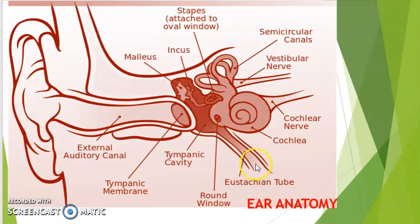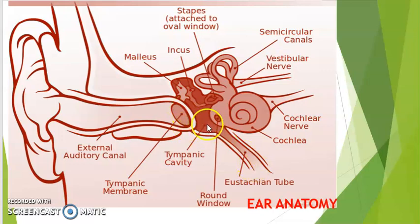There is also a canal known as the eustachian tube which connects the middle ear with the upper part of the throat known as the nasopharynx. This eustachian tube helps to adjust the air pressure inside the middle ear with the external air pressure.